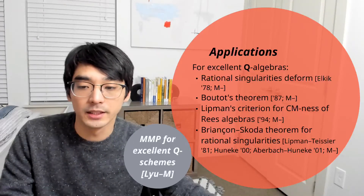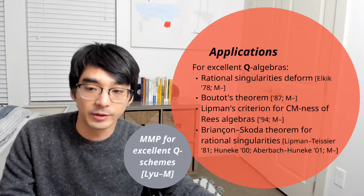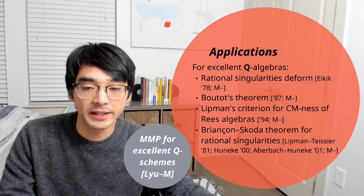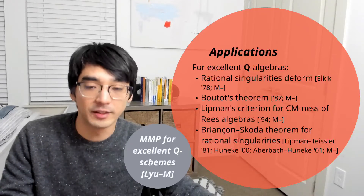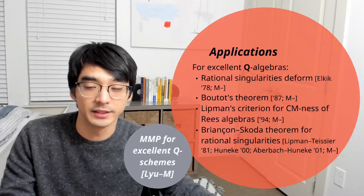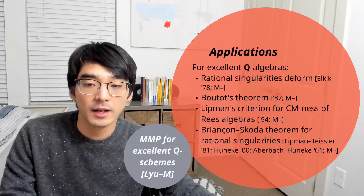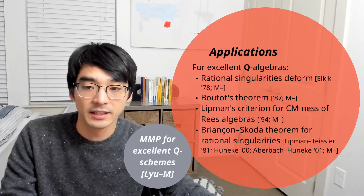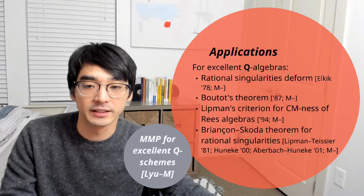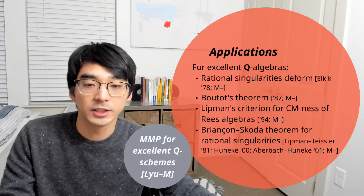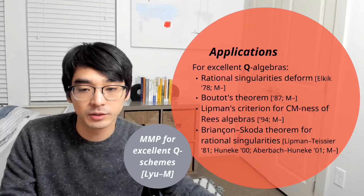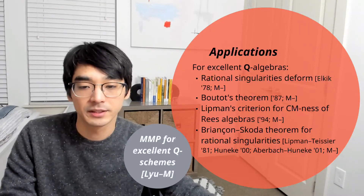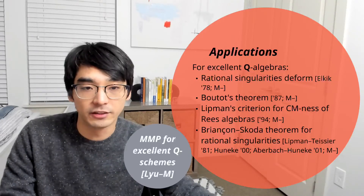The first application I want to mention is that in joint work with Sería Liu, we worked out the minimal model program for excellent Q-schemes. For more commutative algebraic applications, I was able to prove that rational singularities deform for excellent Q-algebras — this is originally due to Elkik for varieties. I was able to prove Boutot's theorem, which says that pure subrings of rings with rational singularities also have rational singularities, again for excellent Q-algebras. I also generalized Lipman's criteria for Cohen-Macaulay Rees algebras and the intersection-codimension theorem for rings with rational singularities, both for excellent Q-algebras.